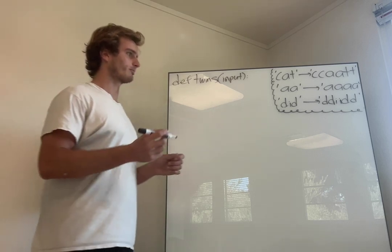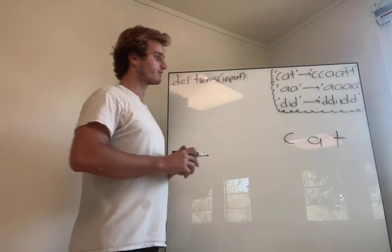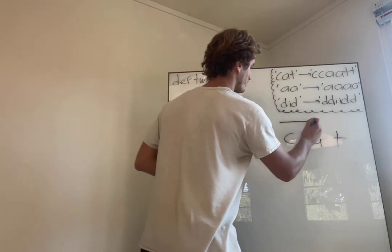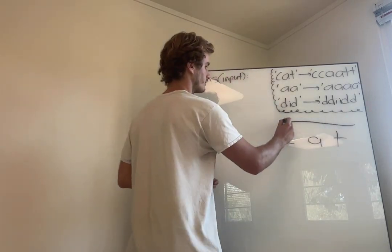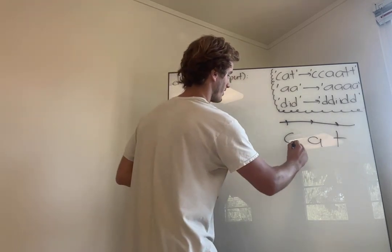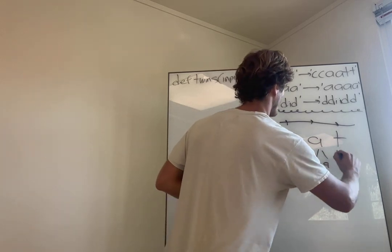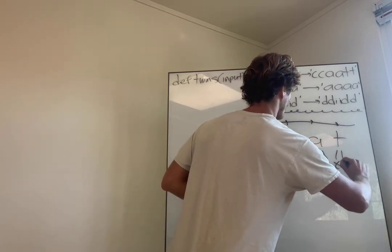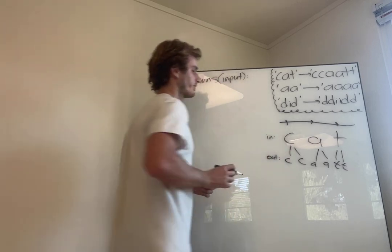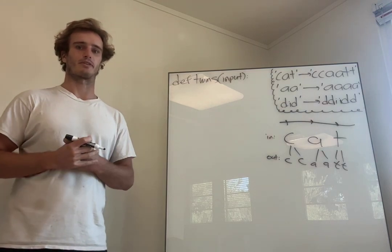I'm going to walk through one example in more detail before we start writing any code. Going back to our original example, let's say we had 'cat' as our input string. What we want to do with this program is loop or iterate through each character in the input, stopping at each character, and then pop that character out twice. So we pop the C out twice, the A out twice, and the T out twice. We want to throw each double character into an output — that's a picture of what the algorithm wants to do.